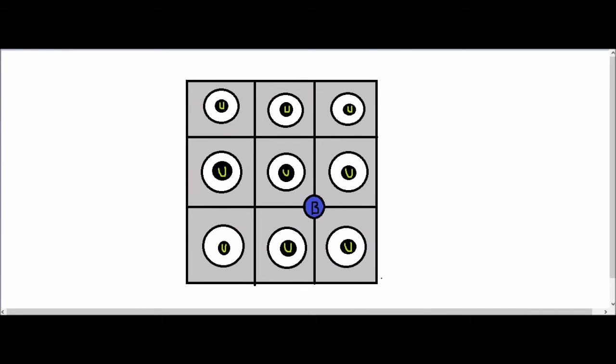Here we have a cross section of the reactor. This is the uranium, which is the nuclear fuel. Here we have the carbon dioxide, which collects the energy. And here we have a boron control rod.